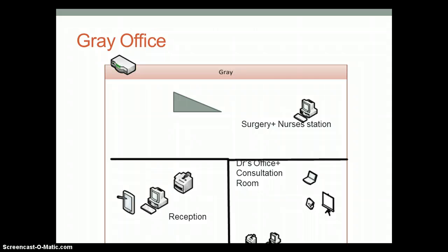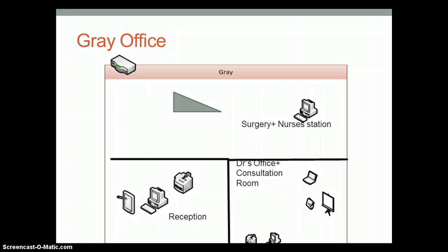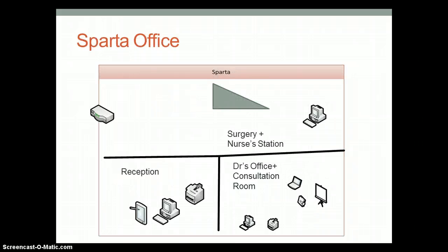Your other locations will look almost identical. Your demarcation zone, or internet connection point, will come in through a router which will direct connections throughout the offices. Your reception area will have a similar setup, minus one PC. Your surgery room will double as your nurse's station with the chair, and your office will double as a consultation room. All of your devices will share drives with the servers back in Milledgeville for consistent information.